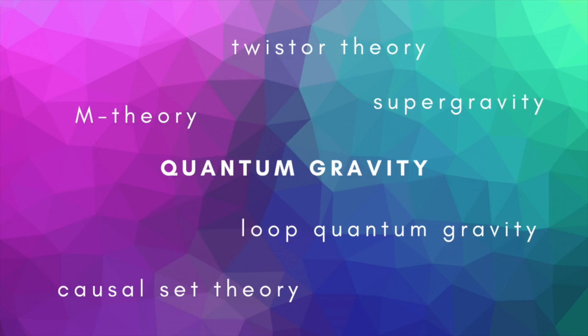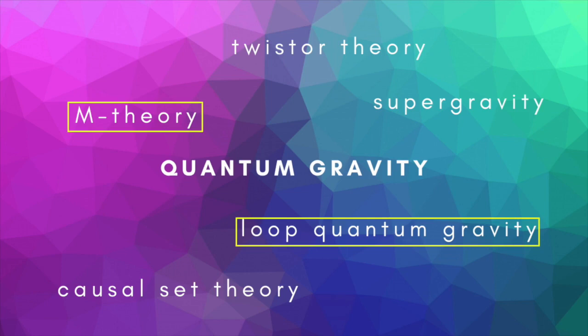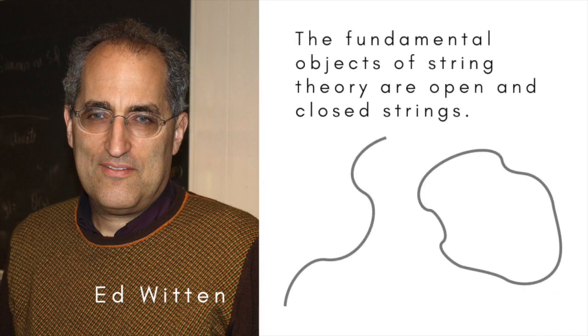Two of the most popular approaches are called M-theory and loop quantum gravity. M-theory is what's known as a theory of everything because it aims to bring together all the fundamental interactions — electromagnetism, the strong and weak forces, and gravity — under a single mathematical umbrella. First introduced by the American physicist Ed Witten in 1996, M-theory unites five different versions of string theory. In string theory, the basic constituents of nature are not point-like particles, but one-dimensional strings. What we perceive to be particles are actually vibrations of loops of string, each with its own characteristic frequency.